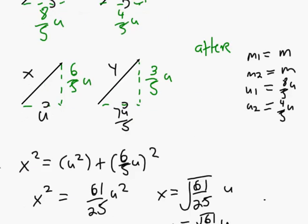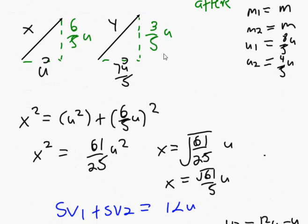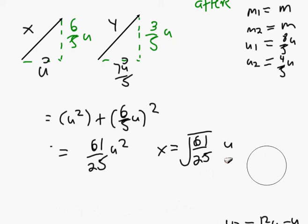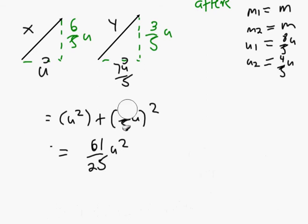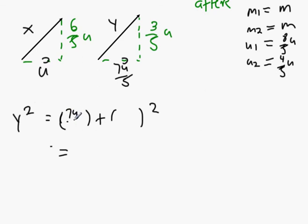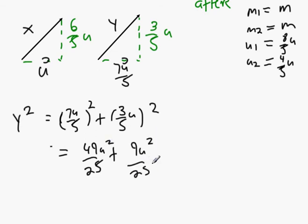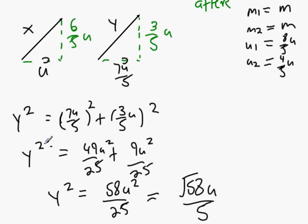And what about the other one, the Y squared? For the Y squared one, we're going to have Y squared equals 7u over 5 squared plus 3 over 5u squared. That's going to be 49 over 25 plus 9u squared over 25. Square root of 58 over 5.